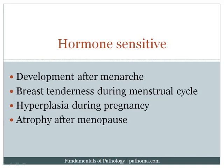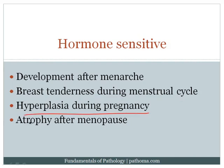Consequences of hormonal sensitivity include breast tenderness during the menstrual cycle. During pregnancy, there is hyperplasia because estrogen and progesterone levels are high — the corpus luteum produces large amounts in the first 10 weeks, then the placenta and fetal-placental unit take over. This drives breast enlargement to prepare for milk production. Finally, when a woman undergoes menopause and estrogen and progesterone decrease, the breast atrophies.